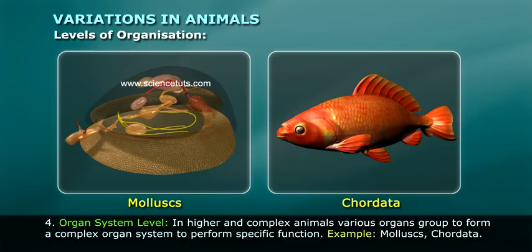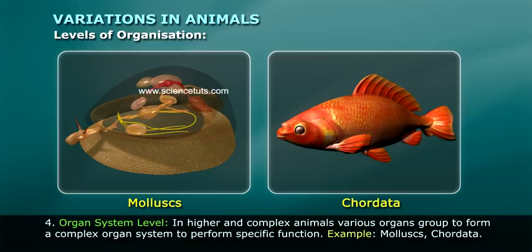At the organ system level, in higher and complex animals, various organs group together to form a complex organ system to perform specific functions. Example: mollusks.